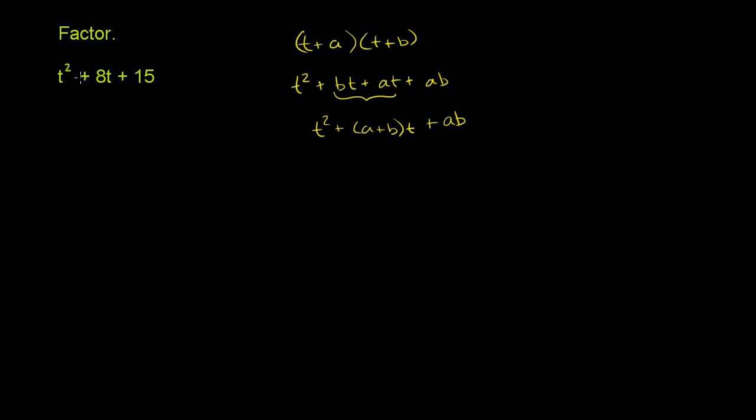Now if we compare this to this right over here, we see that we have a similar pattern. Our coefficient on the second degree term is 1. We didn't have to write it. Then a plus b is the coefficient on t. So 8, right over here, this 8 could be a plus b.